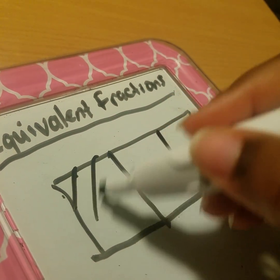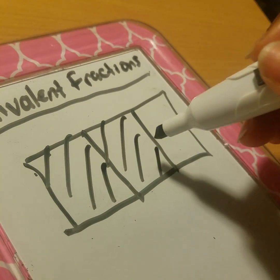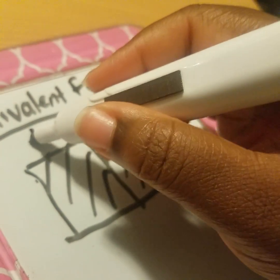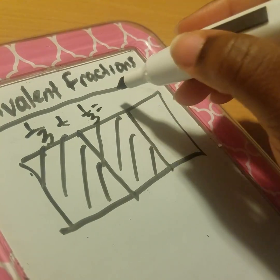If I'm representing two-thirds, I'll shade in one-third plus one-third, which equals two-thirds.